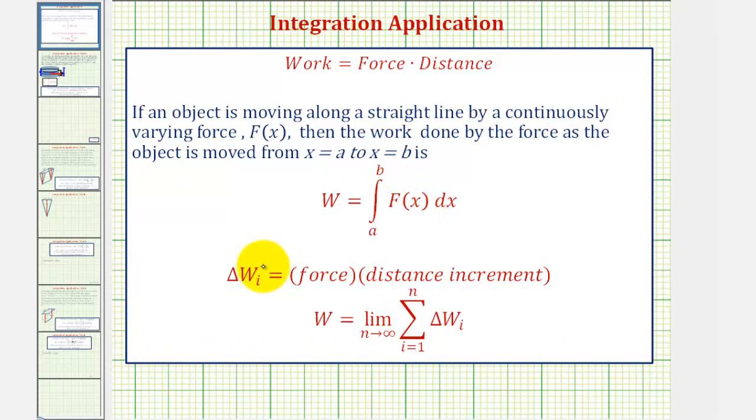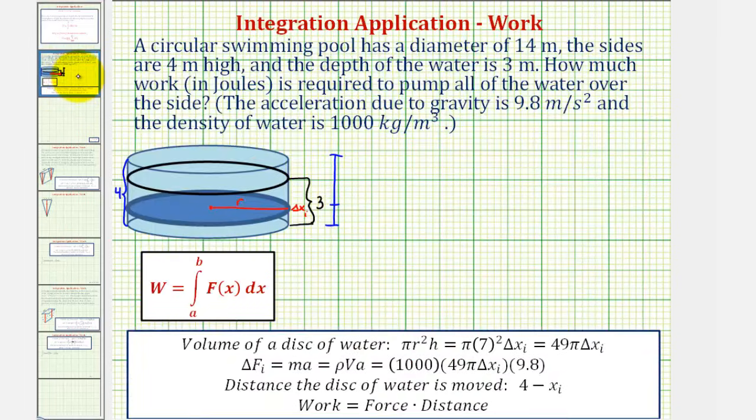To help us set up our integral, we'll focus on determining one increment of work, or the amount of work required to pump one disk over the top, and this will help us set up our definite integral. Going back to our example, let's label the given information. The circular swimming pool has a diameter of 14 meters, and therefore, the radius would be equal to half this, or seven meters. The sides are four meters high, which is labeled here. The depth of the water is three meters, labeled here.